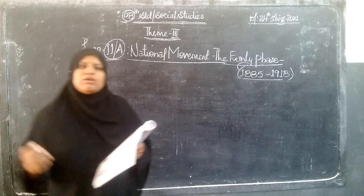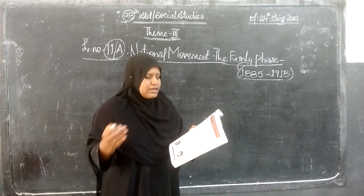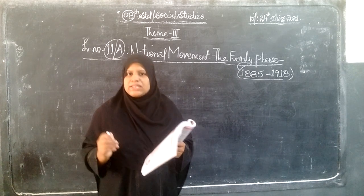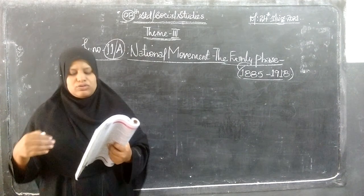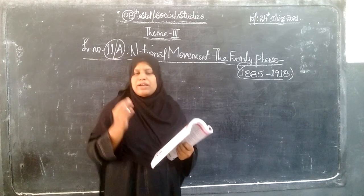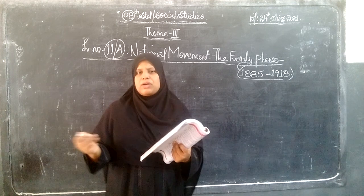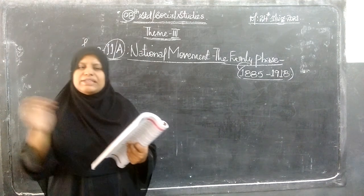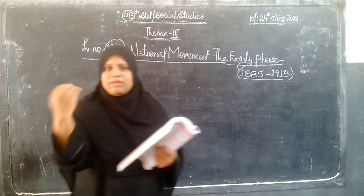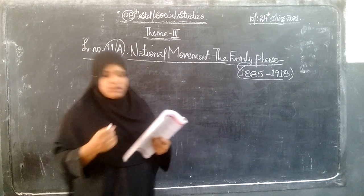The Revolt of 1857 was the first uprising against the British by Indian soldiers. Later, in the year 1866, an early group of association — the East India Association — was formed with the help of Dadabhai Naoroji. This was formed in London, where educated people wanted to know about what was happening in India.